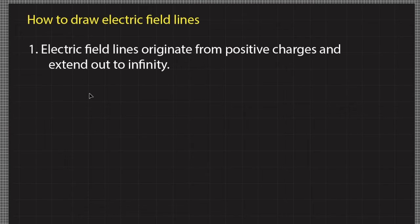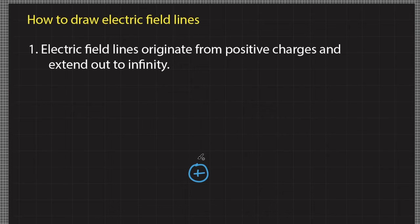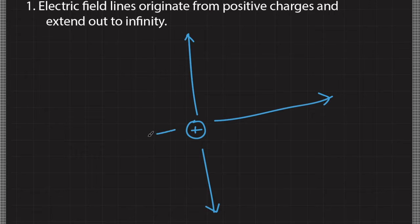Rule number one: electric field lines originate from positive charges and extend out to infinity. For example, if you have a positive charge, you draw its electric field lines originating from the positive charge and extending out to infinity. Since this is a point charge, it has spherical symmetry, so we draw it accordingly.